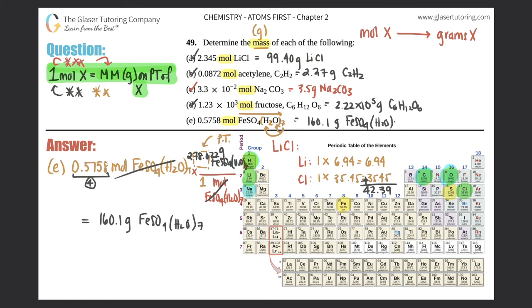I'll just put that over here: 160.1 grams FeSO4·H2O7. Check that off. That's the answer to these five. This was fun. All right, hopefully this helped you guys out. Let me know in the comments, love to hear from you guys. I want to see how you guys are doing.